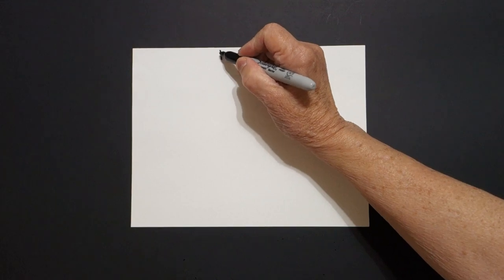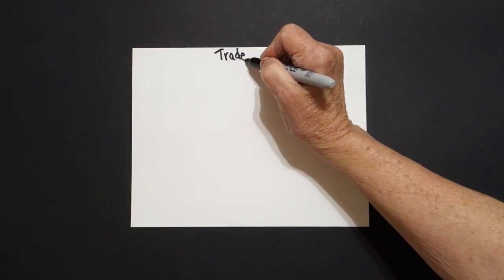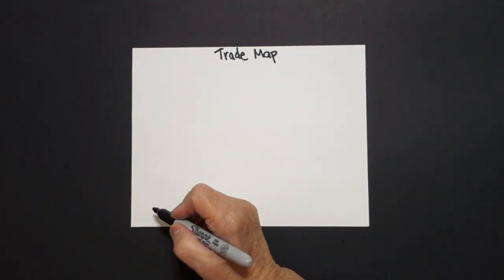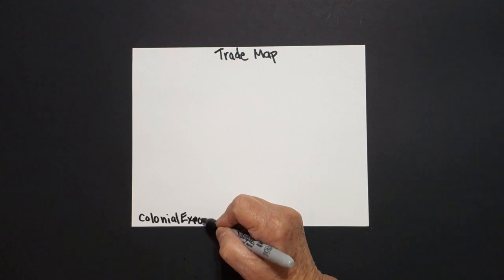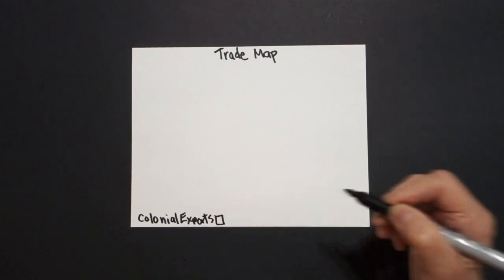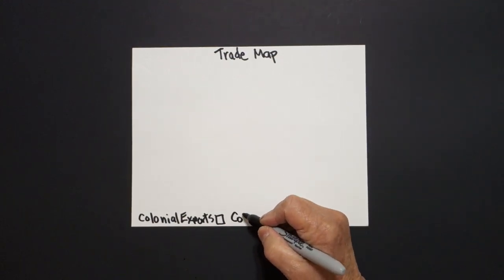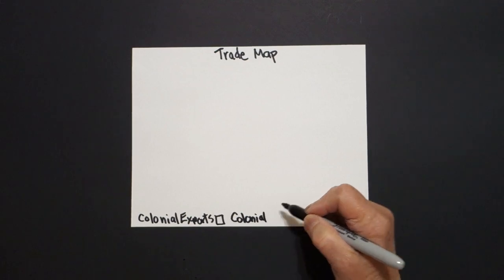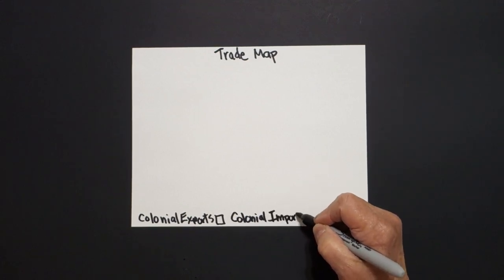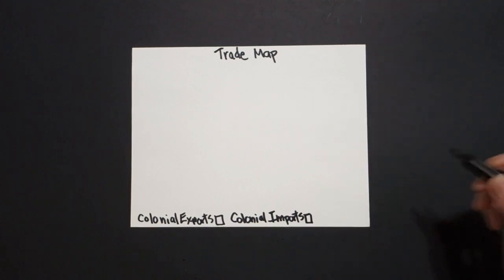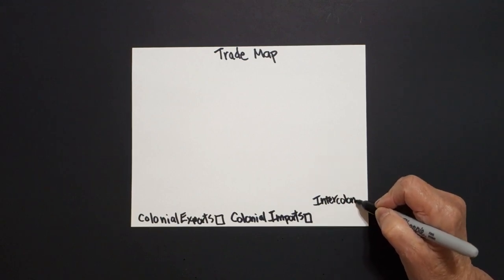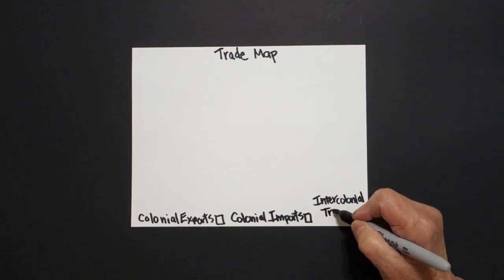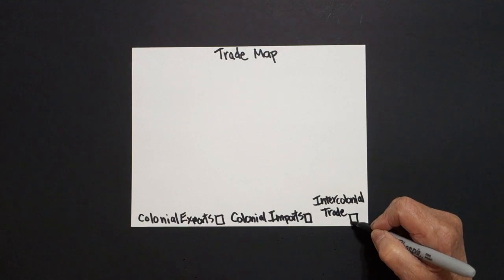Today's project is how to draw a trade map in between the regions of the colonies. Down here at the bottom, we're going to talk about the colonial exports, and I'm going to make a little box so that we'll color code everything. Next to that, we're going to put the colonial imports and a little color-coded box for that. And finally, the inter-colonial trade, and we'll put a box there also for color.